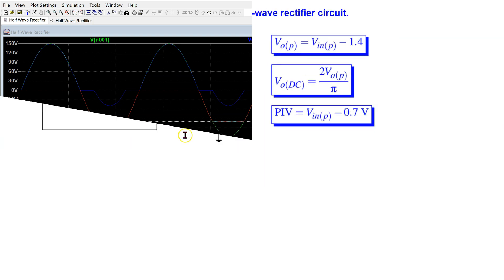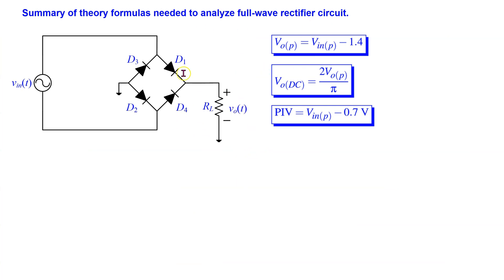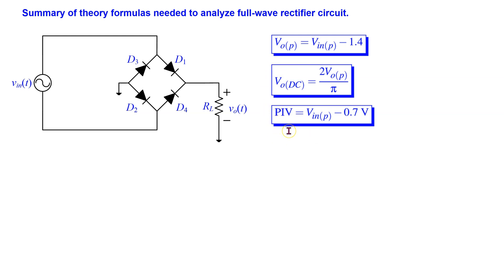This slide summarizes the theory formulas for analyzing a full-wave rectifier circuit. The peak output voltage is the input voltage peak minus two 0.7 volt diode drops, because in a bridge rectifier two diodes are on at any given time. The peak inverse voltage for each diode is the input voltage peak minus 0.7 volts. The peak output voltage can be related to the average DC value of the full-wave rectified output. From LTSPICE we can simulate and obtain V output peak and peak inverse voltage across each diode.